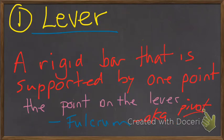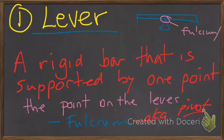Starting off with levers, doesn't matter how you want to say it. Some people are going to say it in a different way. Tomato, tomato. Nobody says tomato. A lever is a rigid bar that is supported by one point. That one point is usually called the fulcrum or the pivot point. So right here, this is our fulcrum or pivot point.